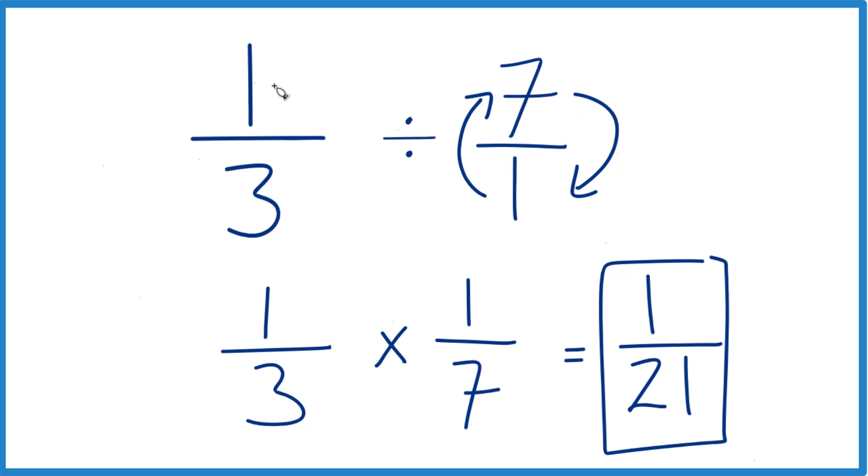It kind of makes sense, because one third is a fraction, it's a number that's less than 1. And we're trying to see how many times 7 this whole number fits into it. So our final answer needs to be less than 1, and it should be smaller than one third, and it is.